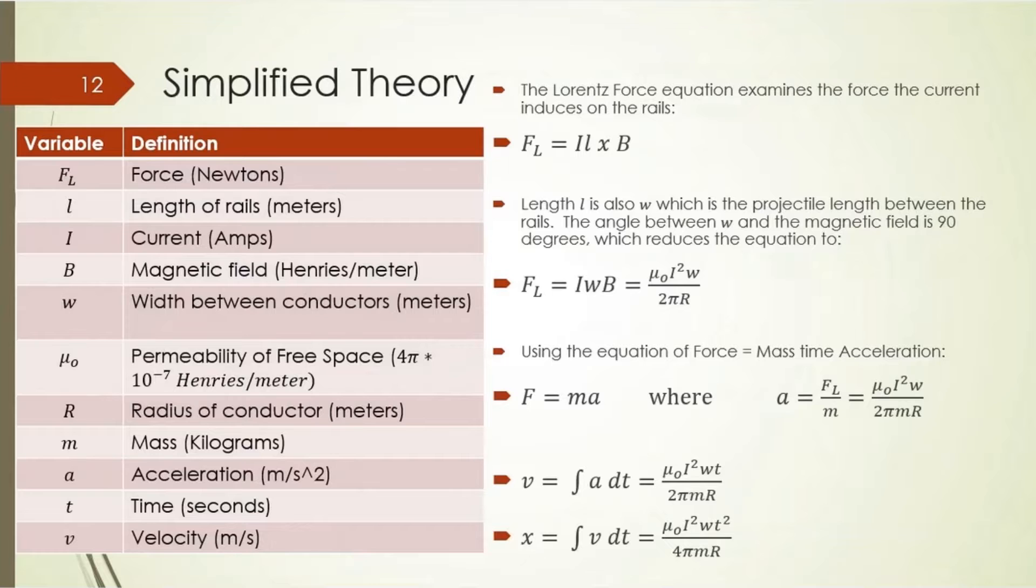And then I looked at the simplified theory. As the name says, it's much simpler than the general theory and the variable magnetic field theory. The first equation up here is the Lorentz force equation, which is the force felt by each conductor from that magnetic propulsion. From the Lorentz force equation, I was able to find the acceleration of the projectile, which takes into account the width of the projectile, but does not add the width of the rails as the variable magnetic field theory does.